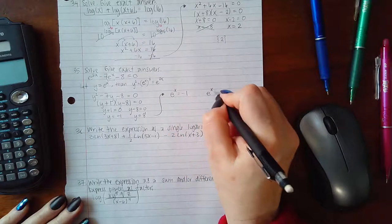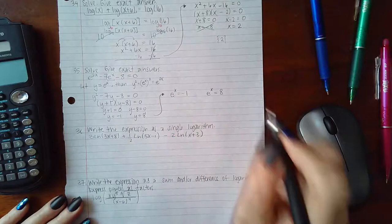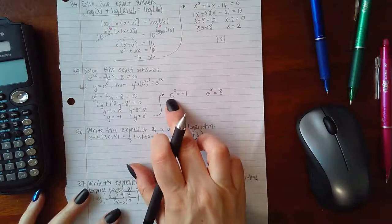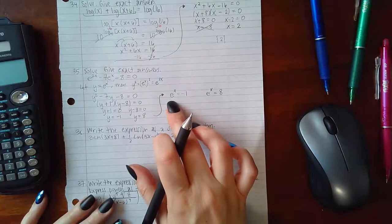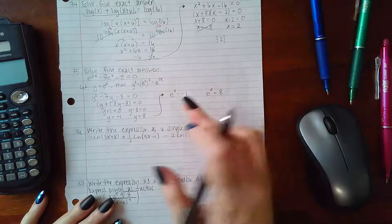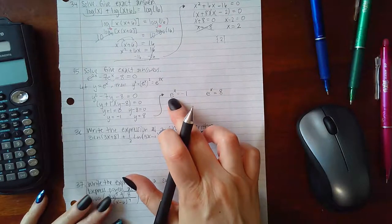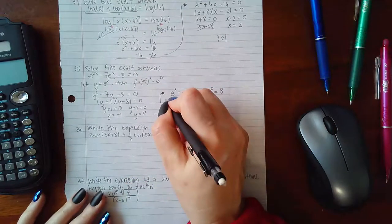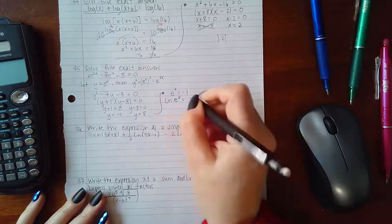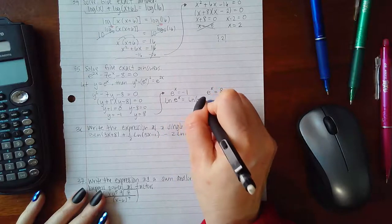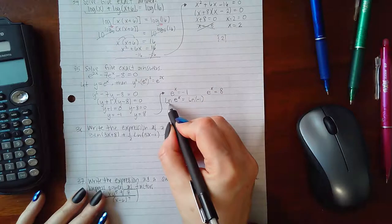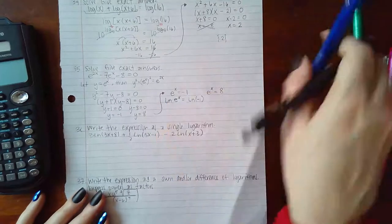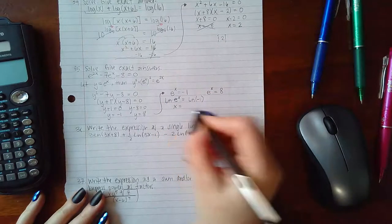So I have e to the x equals negative 1 and e to the x equals 8. Now how do we solve for x? This is an exponential. If we want to get the x out of there, we have to apply the opposite operation. If we have an exponential with base e, we want to apply a log in base e. Logs in base e are called the natural logs. We're going to apply the natural log on both sides. Since this is a log of base e, it's going to cancel out with the exponential base e, which means all I'm going to have left is x.